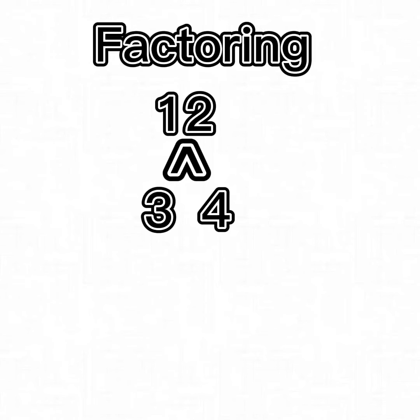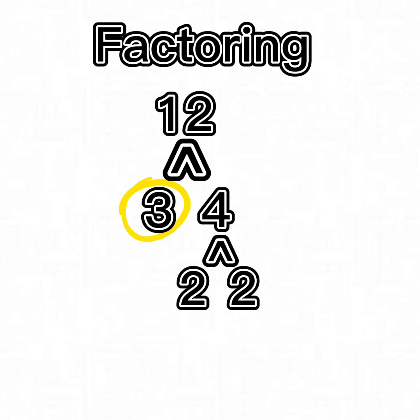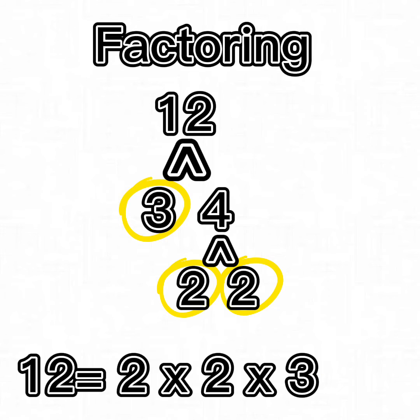12 is equal to 3 times 4. 3 is a prime number so we'll circle it. 4 can be factored into 2 times 2; both 2's are circled because they're prime numbers. So 12 is equal to 2 times 2 times 3.